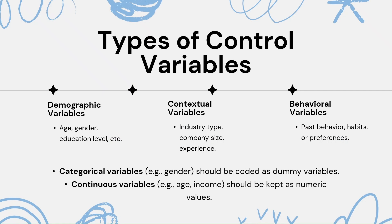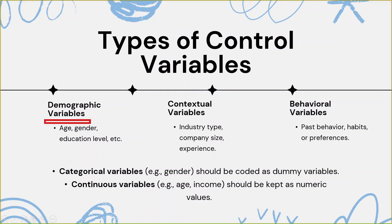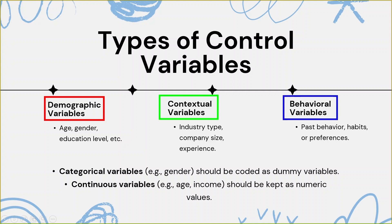What types of control variables do we usually have? Basically, there are three types: number one is demographic variables, another is contextual variables, and the other one is behavioral variables, plus some other types. Demographic variables include age, gender, and education level — these can control the model, as age, gender, and education may have an effect on the dependent variable.